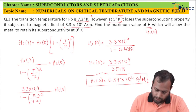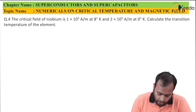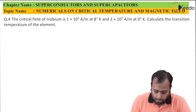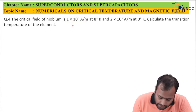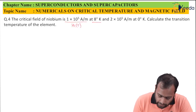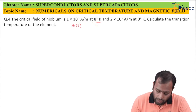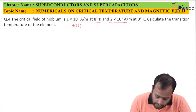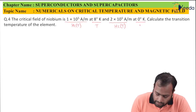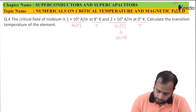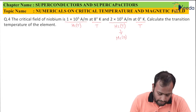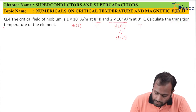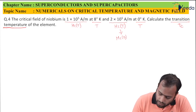Now let's see the next question. The critical field of niobium is 1×10⁵ ampere per meter at 8 Kelvin — this is Hc(T) with T=8 — and 2×10⁵ at 0 Kelvin, which is Hc(0). You have to calculate the transition temperature of the element, meaning find Tc.